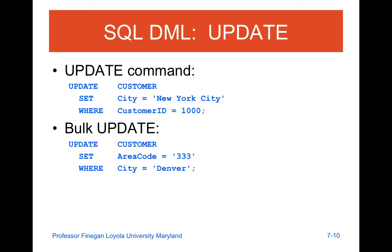A very common example for an UPDATE command: UPDATE customer SET city equal New York. Where you are doing that on a larger span, you're going to be doing it for more than one record — for example, setting area code equals 333 where city equals Denver. So it's going off of an overall value, not a specific record.